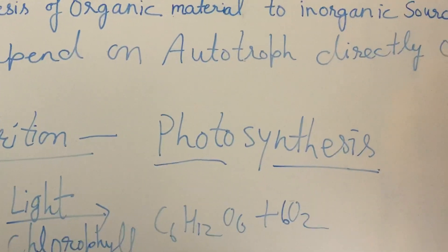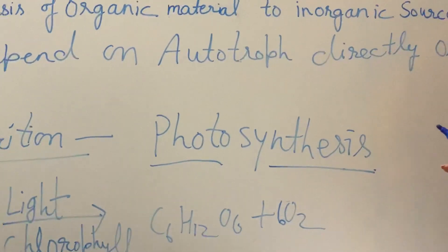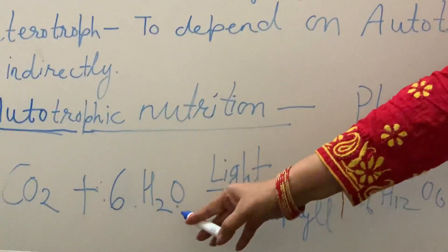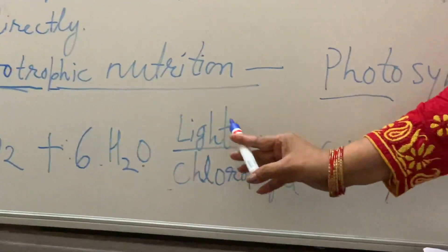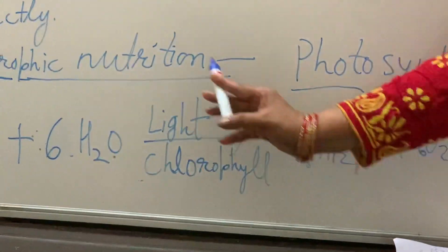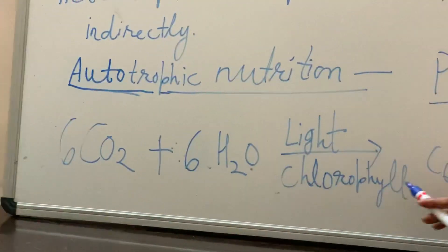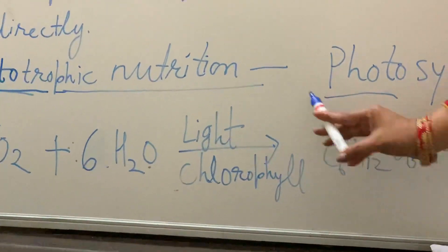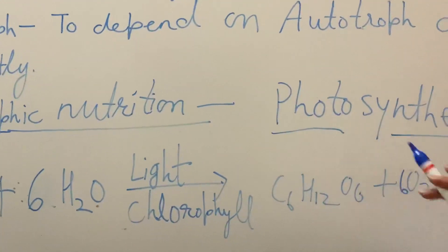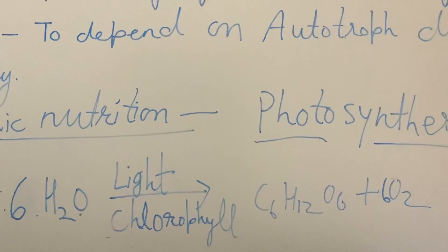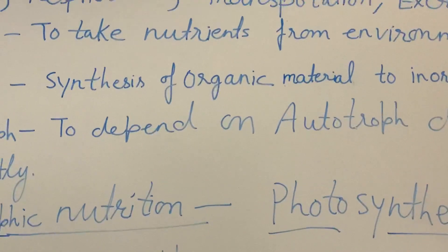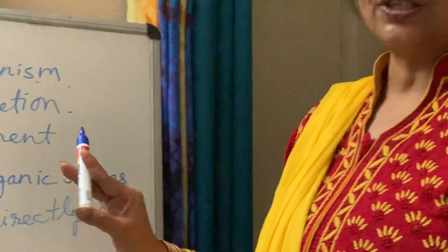Now we conclude the things necessary for photosynthesis. Basically, four main things are necessary for photosynthesis: carbon dioxide, water, light, and chlorophyll. These four substances are necessary for photosynthesis. Now with the help of an activity, we will prove the things required for photosynthesis.